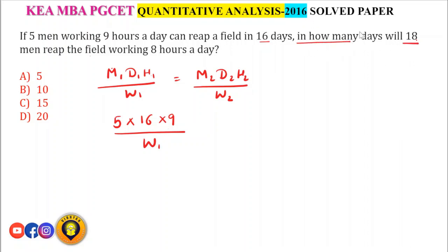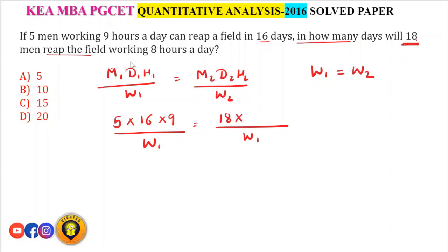In how many days will 18 men reap the field working 8 hours a day? Since they are doing the same work, W1 equals W2, so they cancel. M2 = 18, H2 = 8. Solving: 9 × 2 = 18, 8 × 2 = 16, which cancels with D1 = 16. So D2 = 5 days. The answer is option A, 5 days.